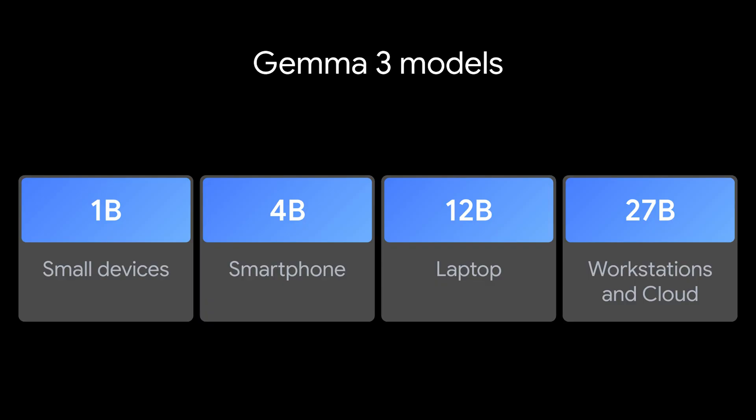Gemma 3 builds on the same amazing research behind Gemini 2.0. It comes in four sizes — 1, 4, 12, and 27 billion parameters — which means you can run Gemma 3 practically anywhere, from a smartphone right up to the cloud. Each size is tailored for different tasks and has different capabilities.